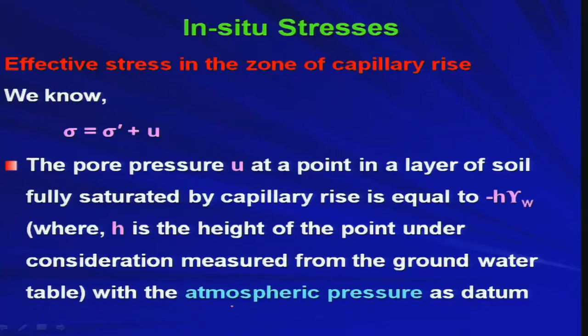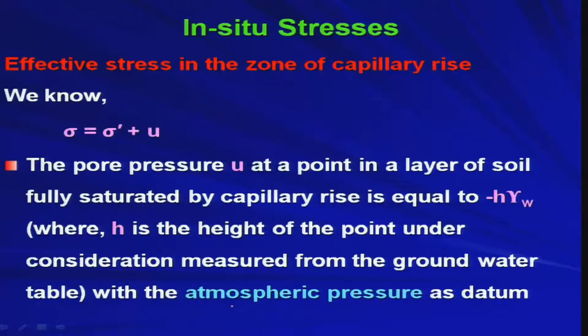Here h is the height of the point under consideration, measured from the groundwater table. At the groundwater table, pore water pressure is zero. If you go into the capillary zone, you get tensile pore water pressure — suction. This pore pressure is obtained with atmospheric pressure as the datum, since the free water surface is exposed to the atmosphere.